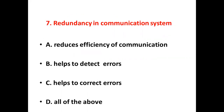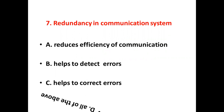Seventh bit. Redundancy in communication system. Option A: Reduces efficiency of communication. Option B: Helps to detect errors. Option C: Helps to correct errors. Option D: All of the above. Answer: Option D, All of the above.